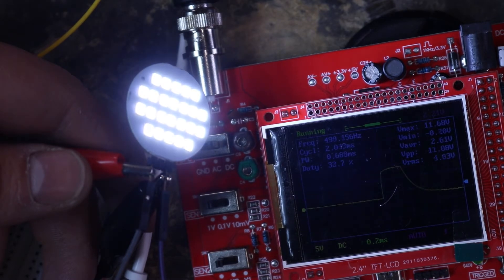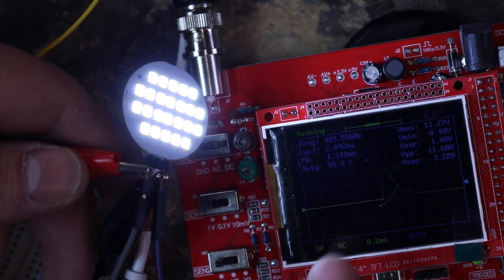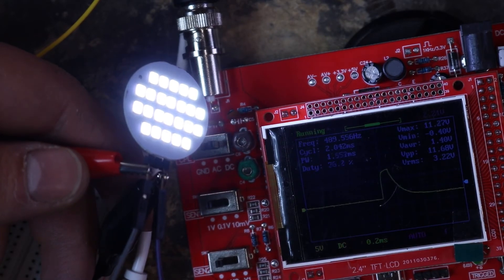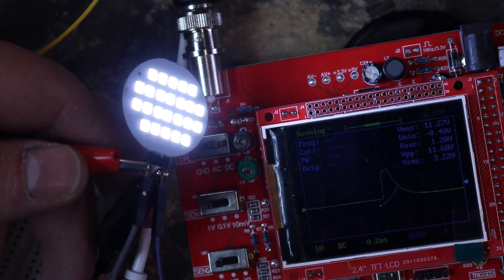So as you can see, if I lower the duty cycle, now I'm probably around 10%. This oscilloscope doesn't really read the percentages too well when it's too high or too low, but I'm averaging about 1.28 volts.